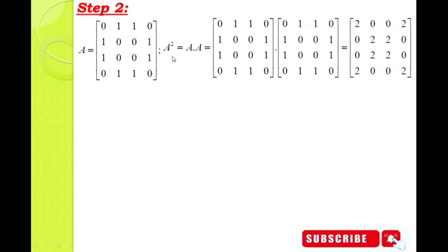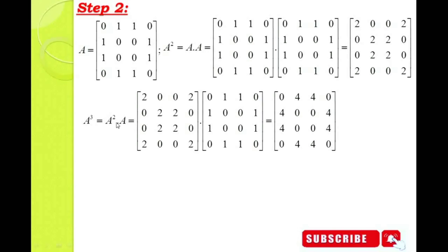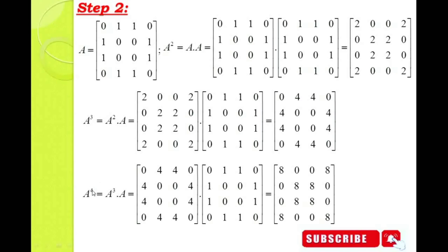Step 2: we are going to find A squared, A cubed, and A to the power 4. A squared equals A × A. A cubed equals A squared × A — that is, A multiplied three times. Multiplying A squared by A gives the A cubed matrix. A to the power 4 can be written as A cubed × A, or A squared × A squared, or A multiplied four times. Multiplying A cubed by A gives the A power 4 matrix.